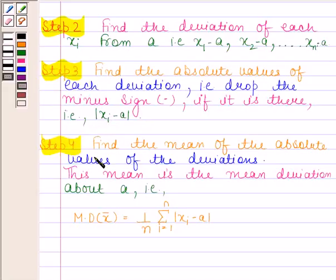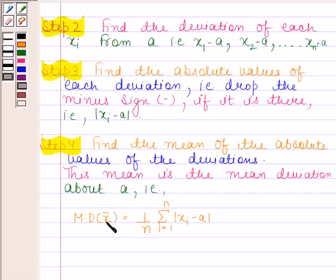Then in the last step, we find the mean of the absolute values of the deviations, and this mean is the mean deviation about A. That is, mean deviation about the mean equals 1 by N into summation from i equals 1 to N of mod of Xi minus A.